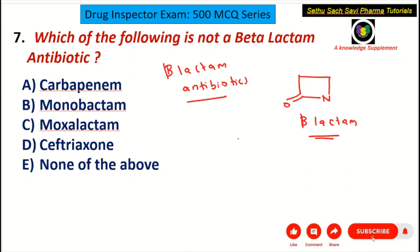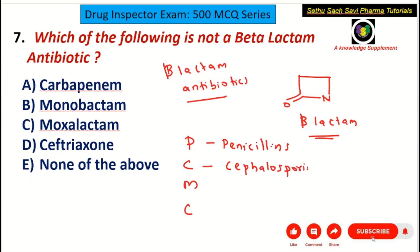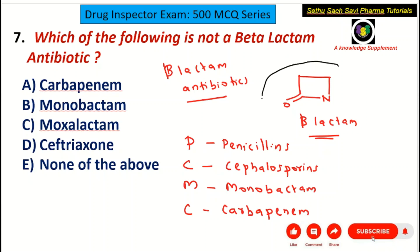Which antibiotics have this beta-lactam structure? You can remember the mnemonic PCMC: P stands for penicillins — all penicillins belong to beta-lactam antibiotics. C stands for cephalosporins. M stands for monobactam. C stands for carbapenem. So penicillins, cephalosporins, monobactam, and carbapenem all contain this particular beta-lactam structure.